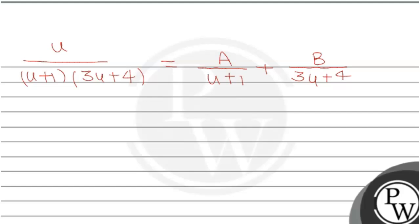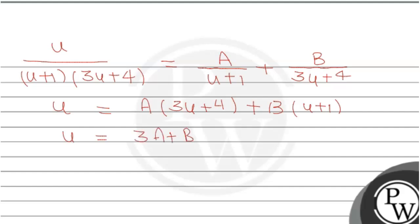We assume this decomposition. Taking LCM on both sides, we get: u = A(3u+4) + B(u+1). Simplifying the right-hand side gives: u = (3A+B)u + (4A+B).